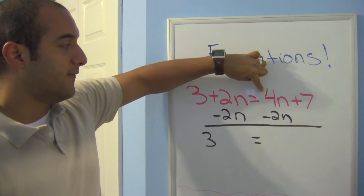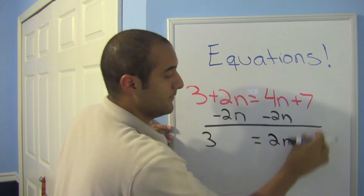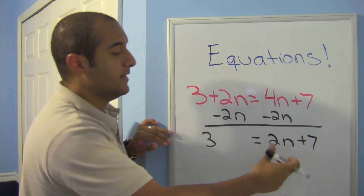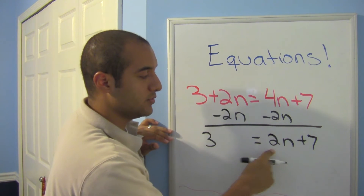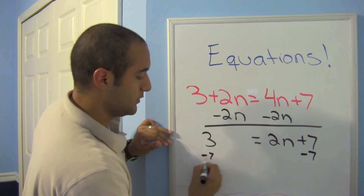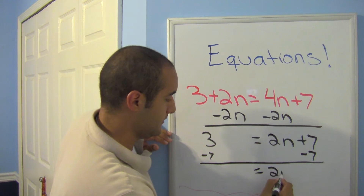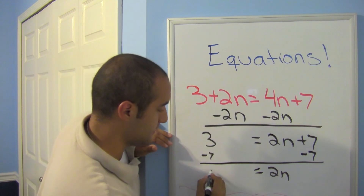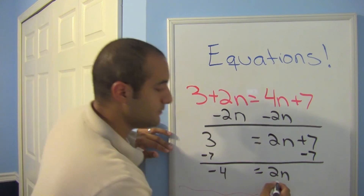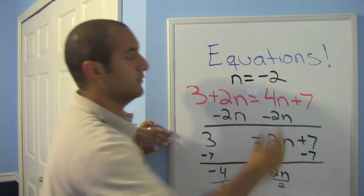I can only subtract n from another n — I'm collecting like terms. Four things minus two things gives me 2n. I bring down the plus 7 as well. Now I need to get rid of that 7, so I subtract 7 from both sides. On the left, 3 minus 7 is negative 4. So negative 4 equals 2n — divide both sides by 2, and the final answer is n equals negative 2.